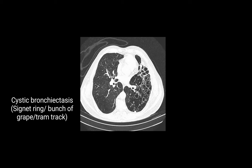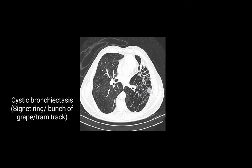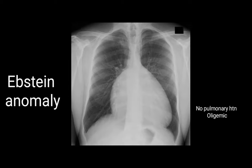The next image is of cystic bronchiectasis. In bronchiectasis we will see the signet ring sign or bunch of grapes appearance, or tram track appearance. The three important words related to cystic bronchiectasis are: signet ring, bunch of grapes, and tram track.